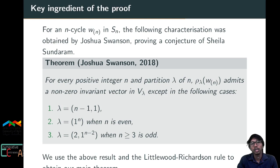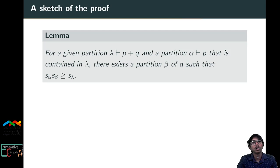We use Joshua Swanson's result and the Littlewood-Richardson rule to obtain our main result. The first main lemma states: given a partition λ of p+q and a partition α of p contained in λ, there exists a partition β of q such that s_α · s_β ≥ s_λ.